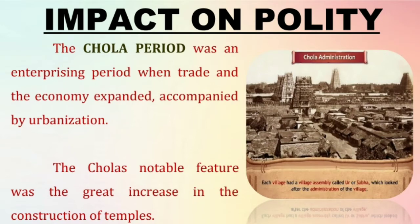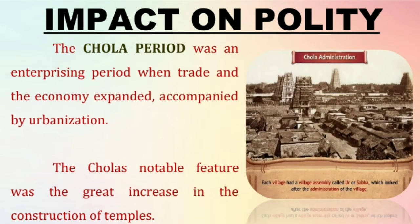The capital of Cholas was Tanjur. The Chola Empire was divided into three major administrative units called Central, Provincial and Local Government. The Uttrameru inscriptions throw light on the administration of the Cholas. The Chola period was an enterprising period when trade and the economy expanded, accompanied by urbanization. The administrative machinery was re-organized during Chola rule.